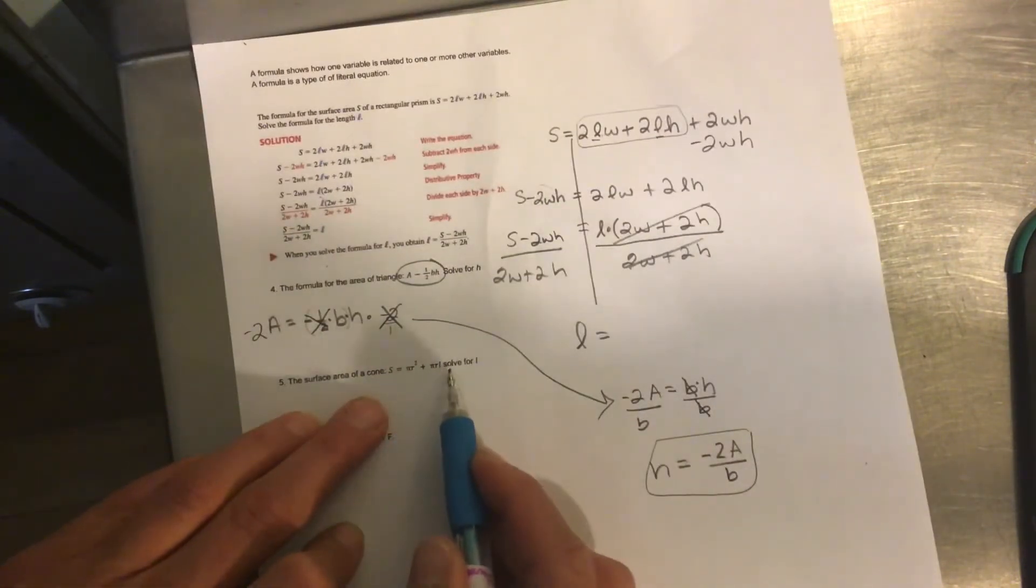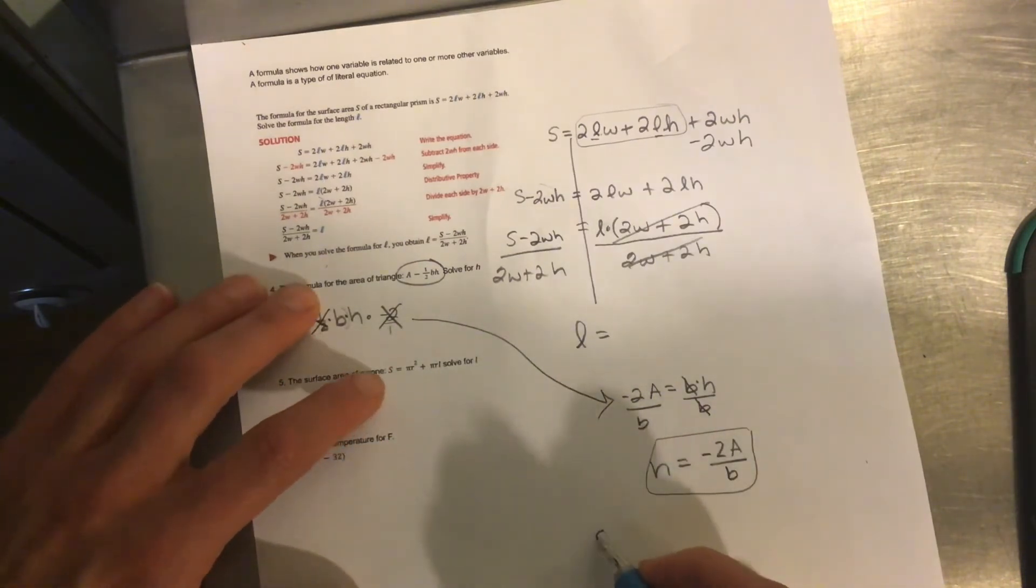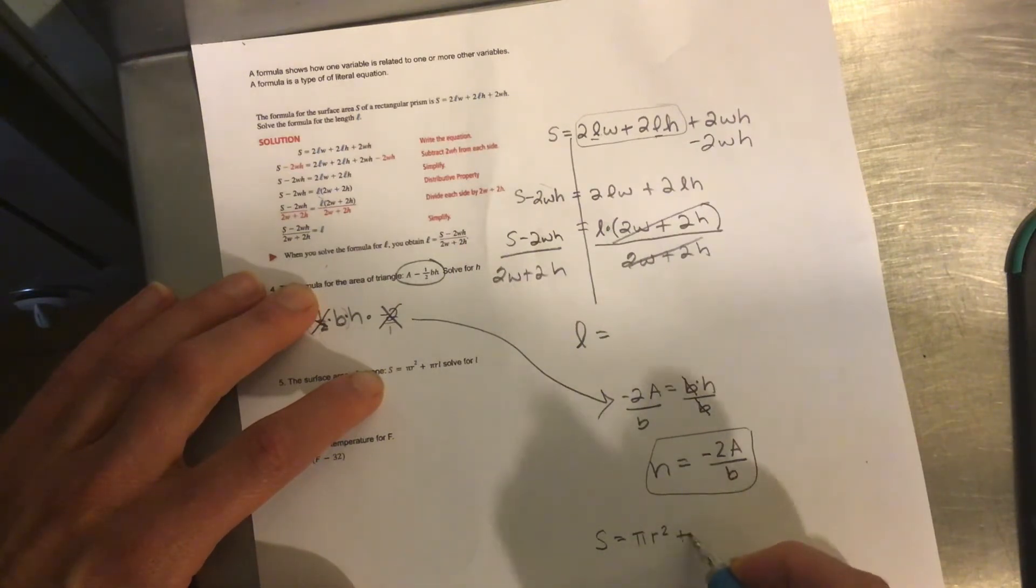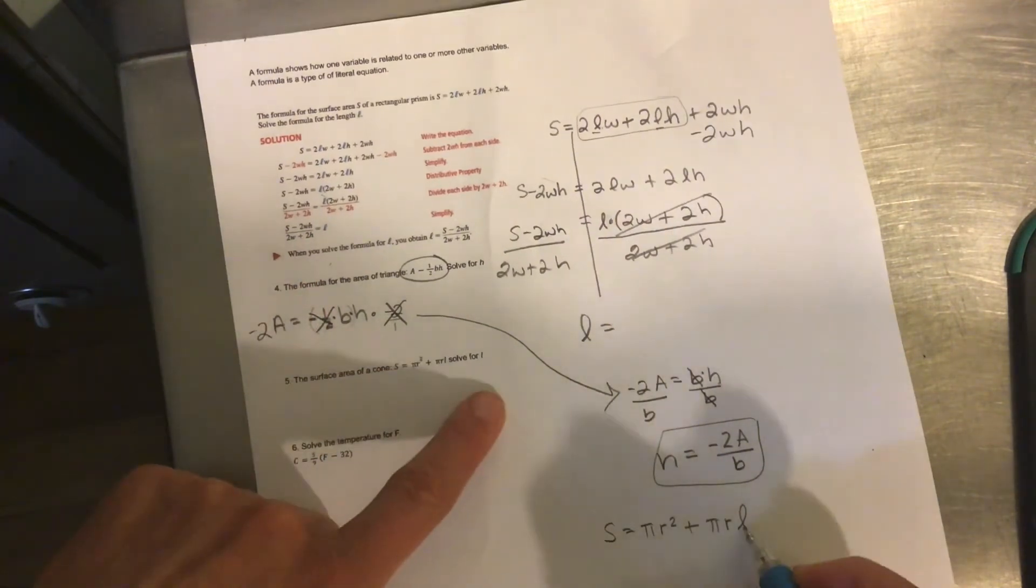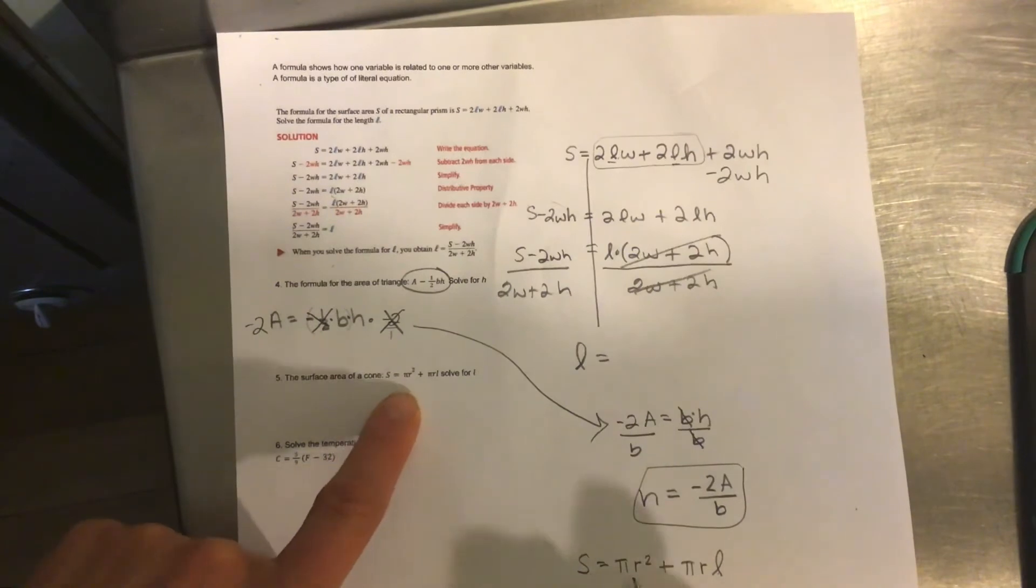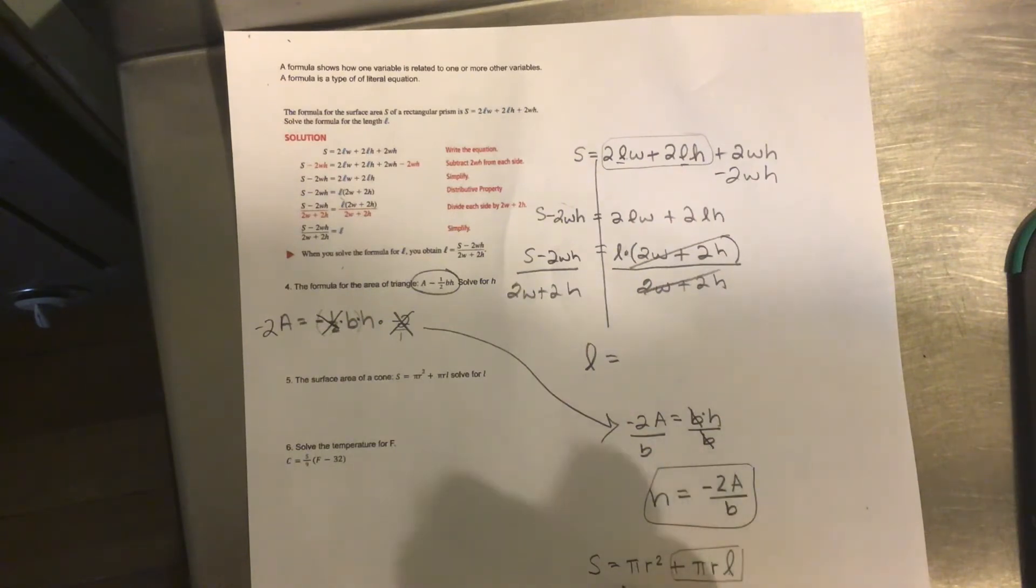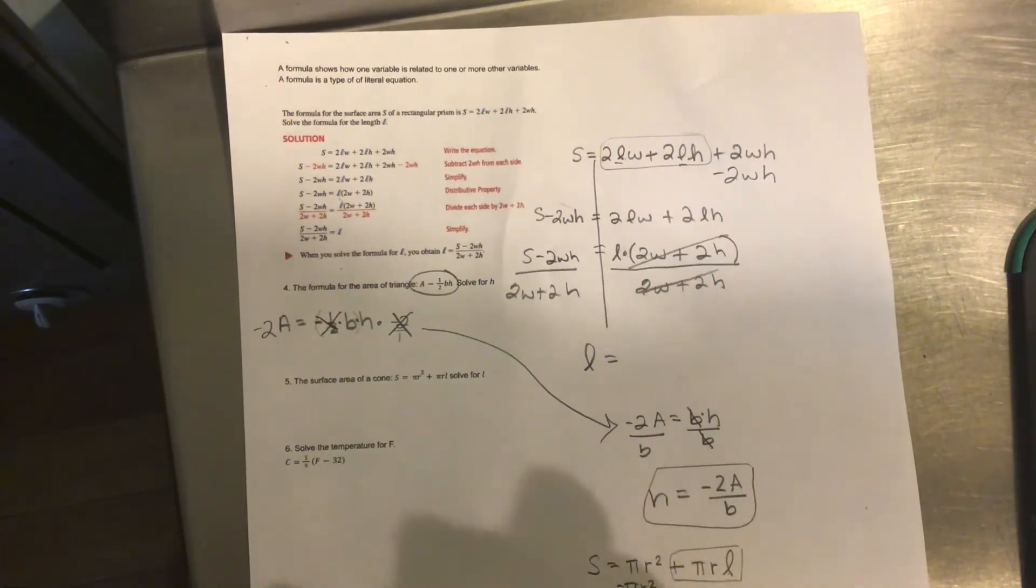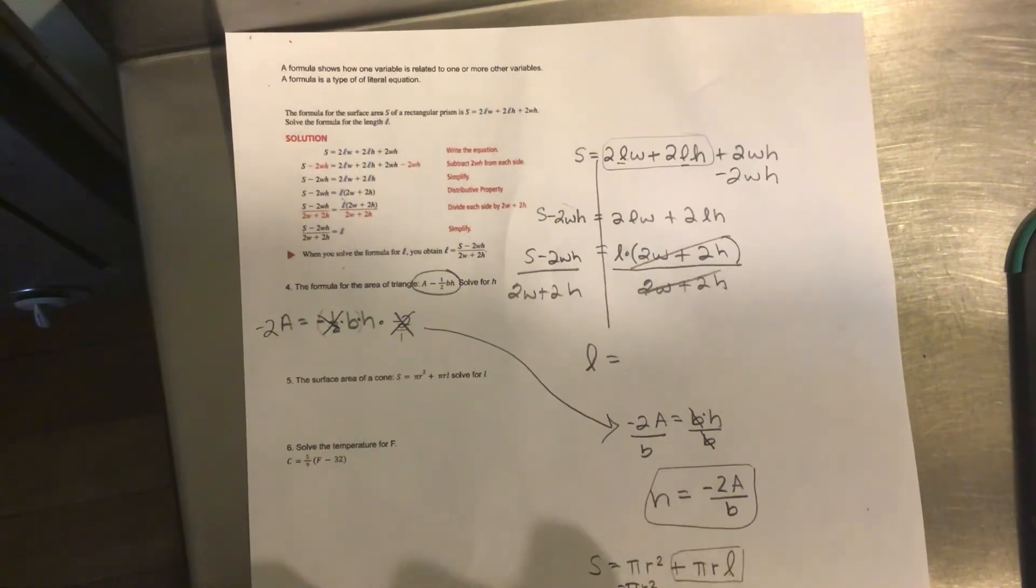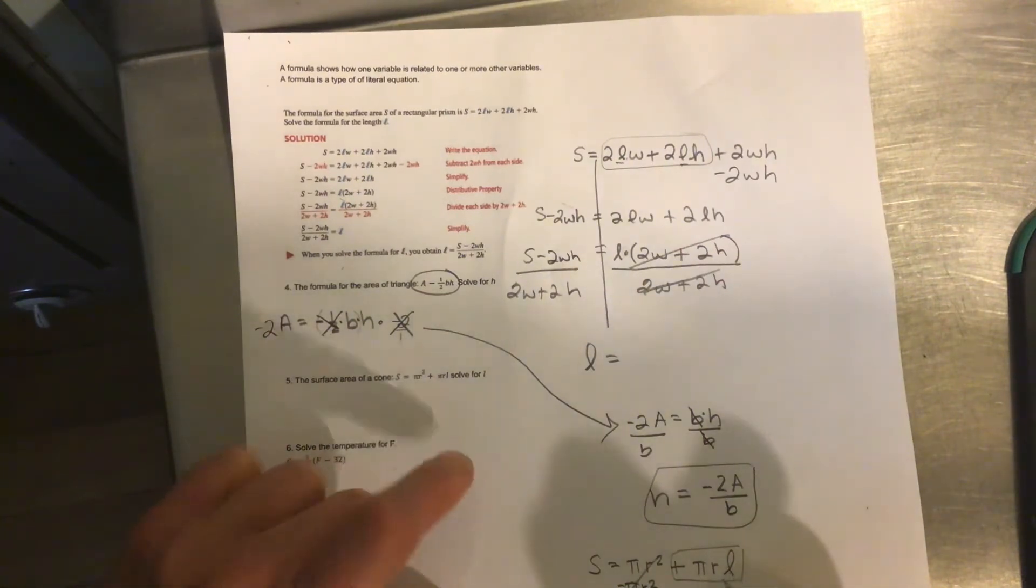All right. Surface area of a cone and solve for L. So S equals pi R squared plus pi R L. And we're solving for L. Did I write it correctly? S equals pi R squared. So there is only one term with that L. So let's subtract this pi R squared minus pi R squared. So S minus pi R squared is equal to pi R L. And so if I'm solving for L, those two are multiplying. So I would divide pi R. I would divide pi R.